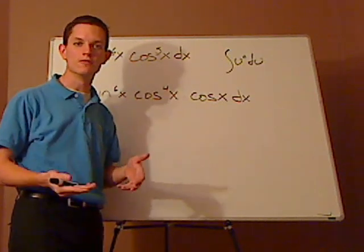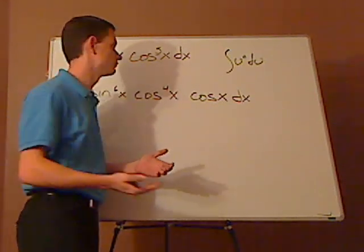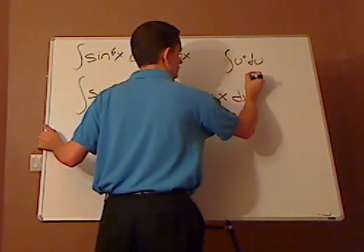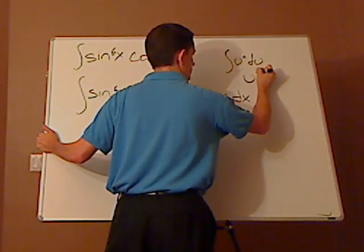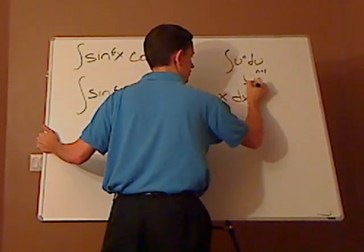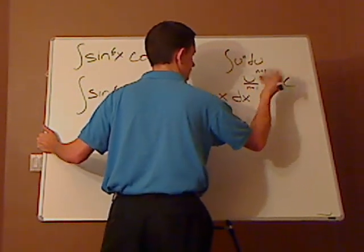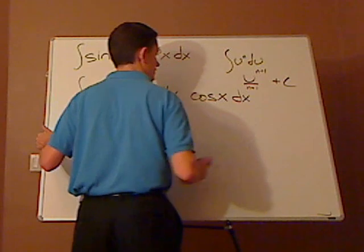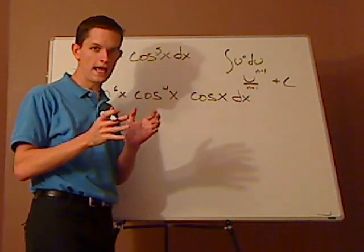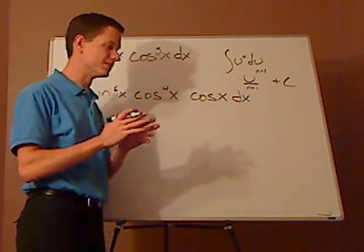If you have it in that form, write power rule. That will give you u raised to the n plus 1 over n plus 1 plus c, the constant. So if we can do that, then we can just simply take the integral.